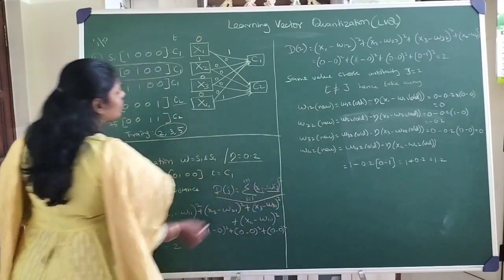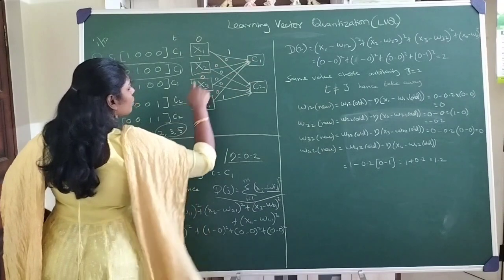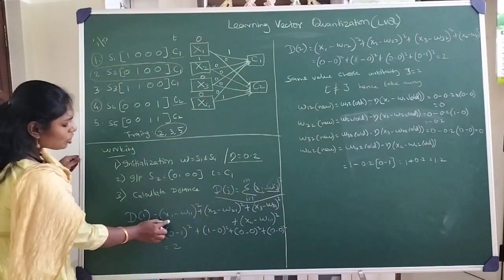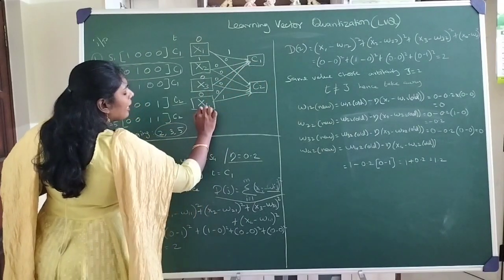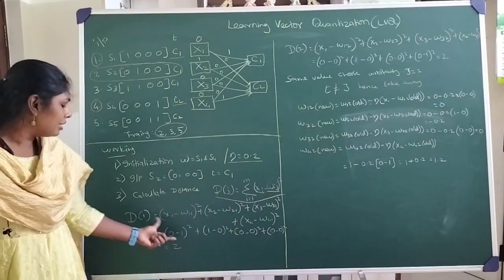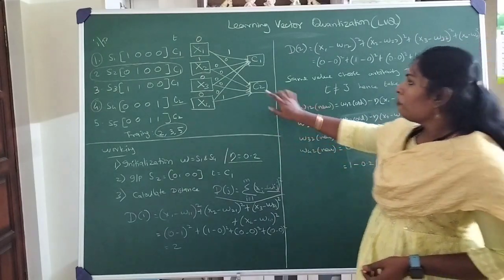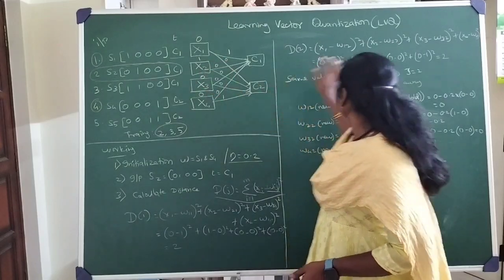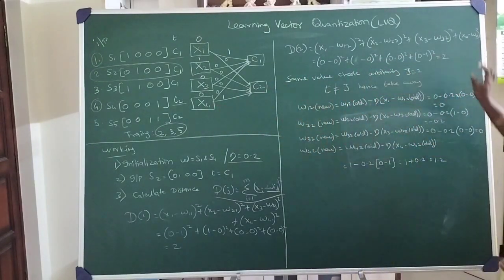For cluster 1, the distance calculation is: (0−1)² + (1−0)² + (0−0)² + (0−0)² = 1 + 1 + 0 + 0 = 2. Similarly, for cluster 2: (0−0)² + (1−0)² + (0−0)² + (0−1)² = 0 + 1 + 0 + 1 = 2. Both distances equal 2.